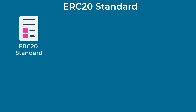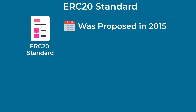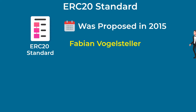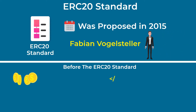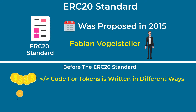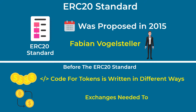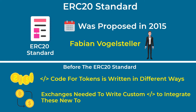The ERC-20 standard was proposed in 2015 by the developer Fabian Vogelsteller. Before creating this standard, development teams wrote the code for their tokens in different ways, and crypto exchanges needed to do extra work and write additional code to integrate any of these new tokens with their platform.